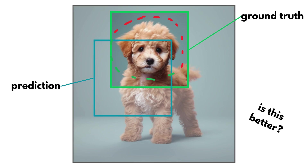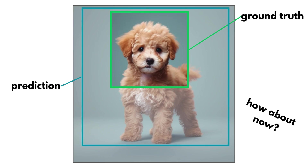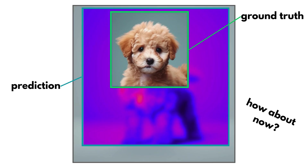Is this new prediction better now? A bit hard to tell. One thing we can see is that the area of overlap seems to be a bit bigger between the two bounding boxes, which is good. With this new prediction though, we get a better area of overlap between the ground truth and the prediction, but also a lot of erroneous area. Intuitively, this isn't too good. All of that region that is outside the ground truth, aka the false positive, should definitely be penalized in some way.